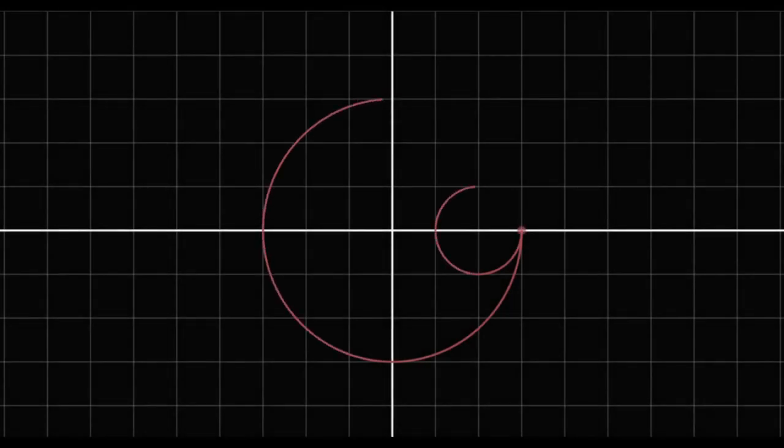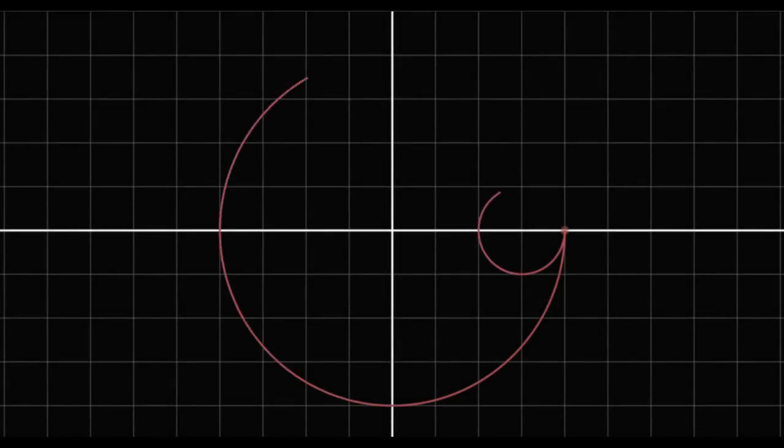Attractive curves can also be generated by circles rolling inside of other circles. A circle rolling in a circle thrice its radius gives a curve called a deltoid. A circle rolling in another circle four times its radius gives a curve called an asteroid.